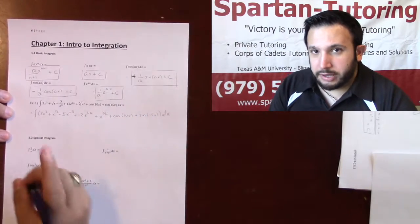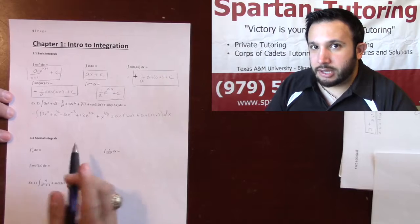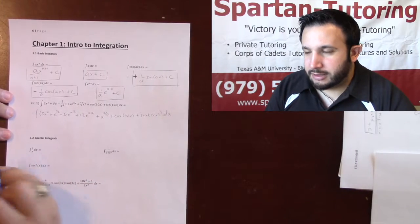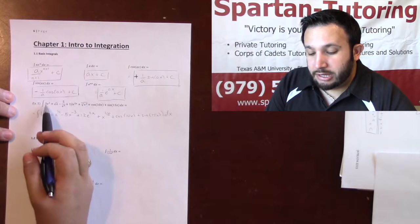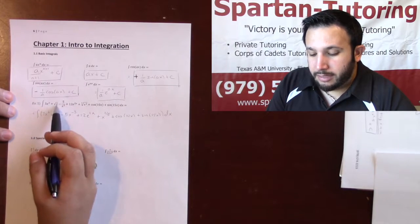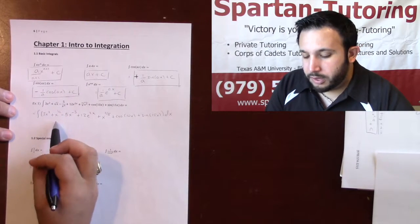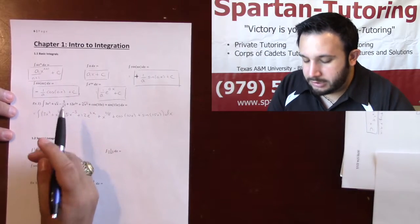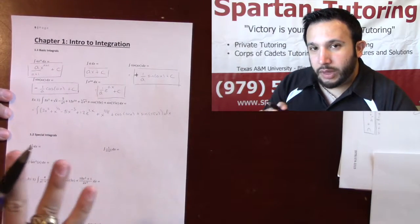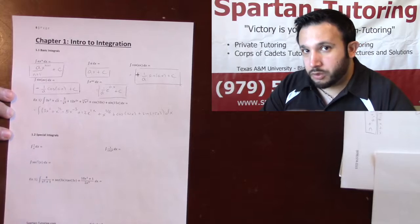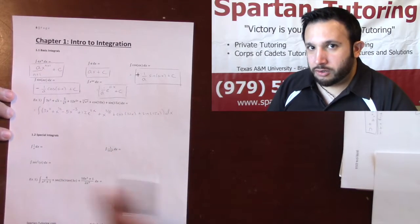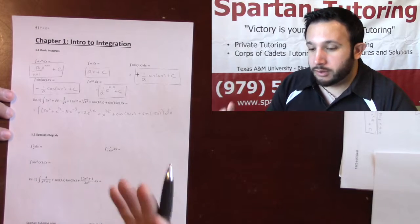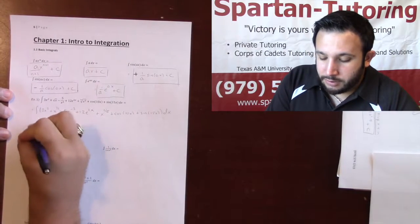Now that I have this algebraically rewritten, now let's actually integrate. A big cardinal sin that I see people do all the time is they'll take the integral of 3x squared and then algebraically rewrite this as x to the 1 half. Don't do that. Please don't do that. You need to do algebra first. And once you've algebraically simplified everything, then go ahead and actually do calculus and take the anti-derivative.